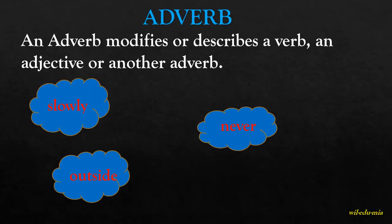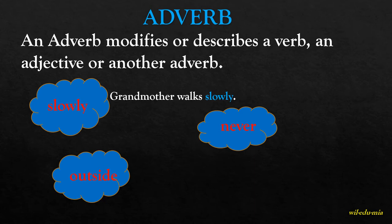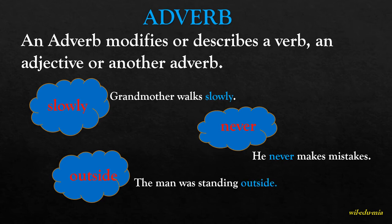Adverb. An adverb modifies or describes a verb, an adjective, or another adverb. 'Grandmother walks slowly' — the manner of walking is slowly, so it's an adverb of manner. 'He never makes mistakes' — the frequency is shown here, so it's an adverb of frequency. 'The man was standing outside' — outside is an adverb of place.